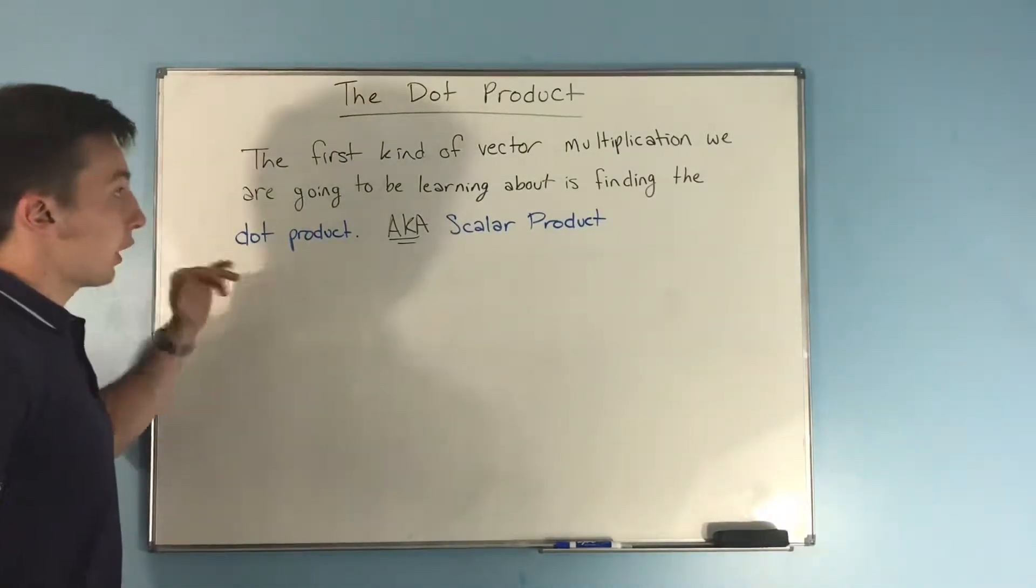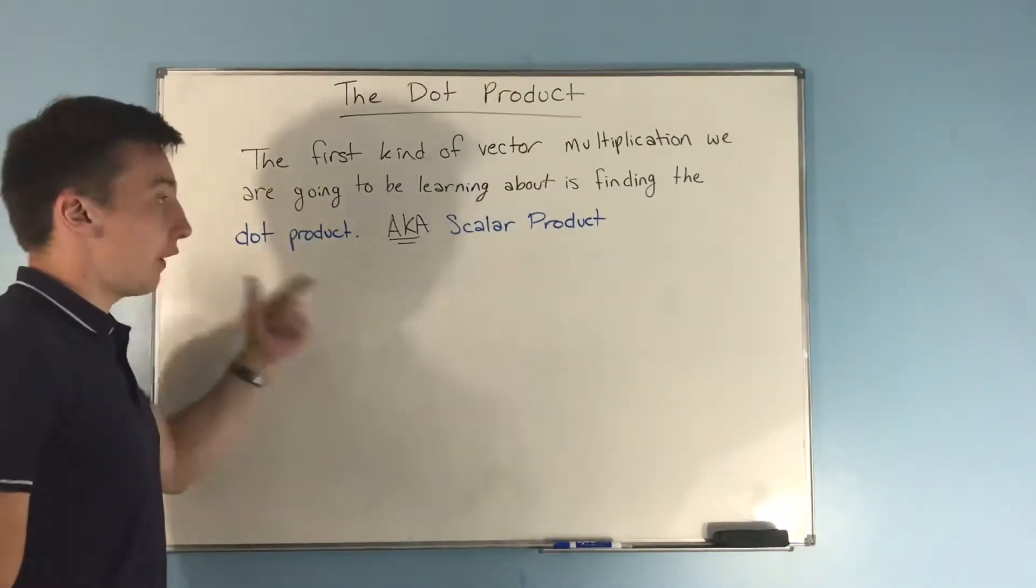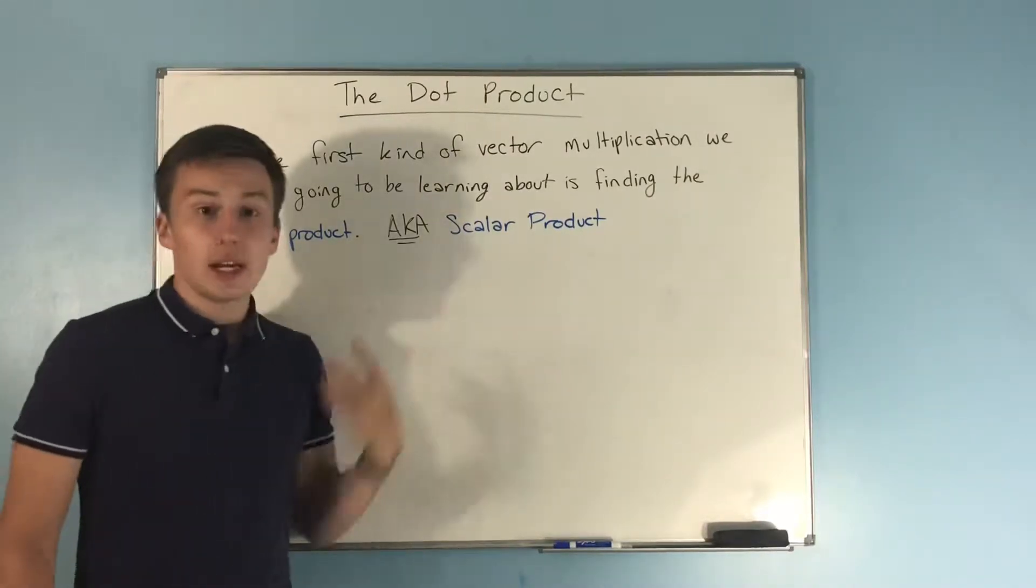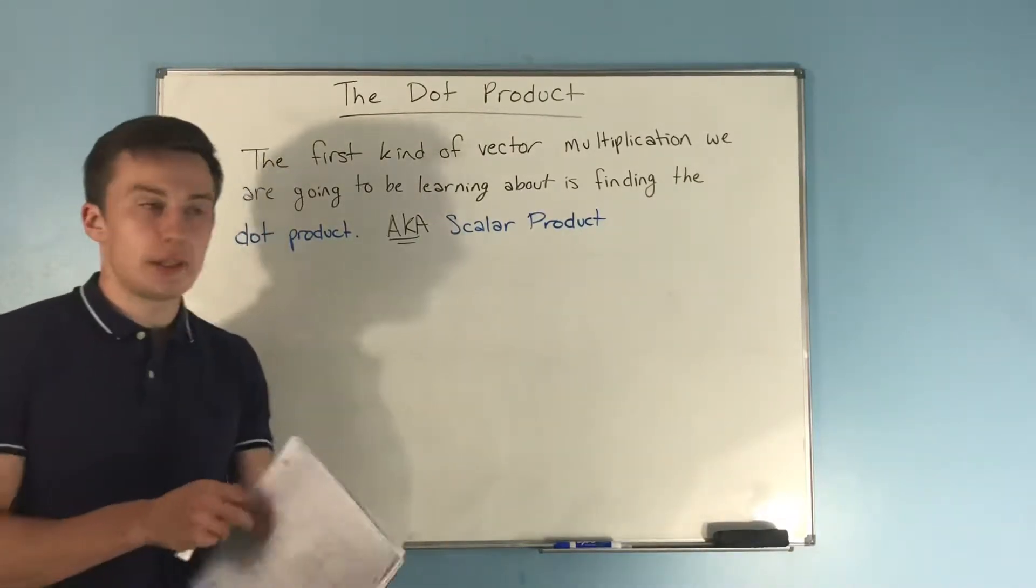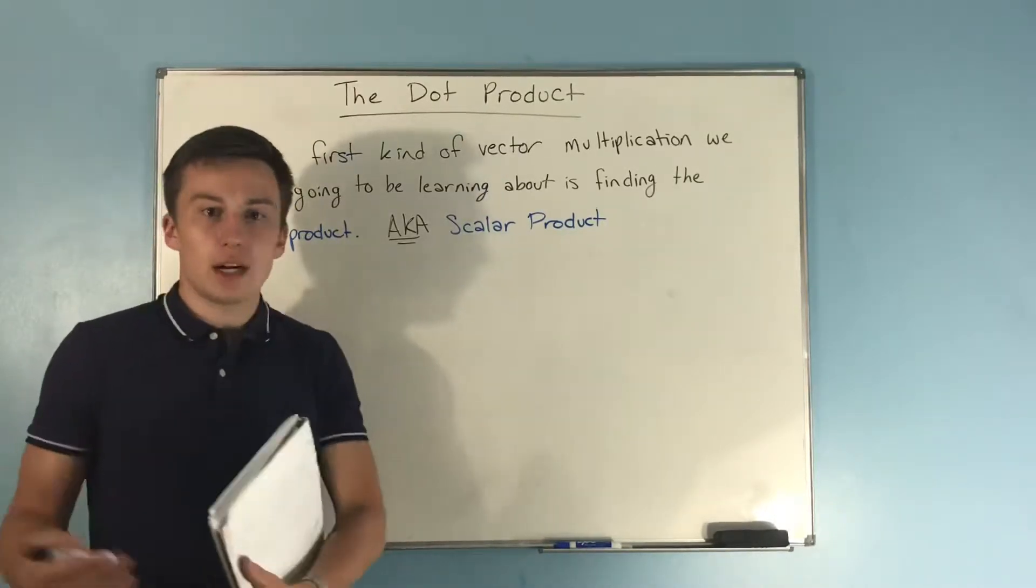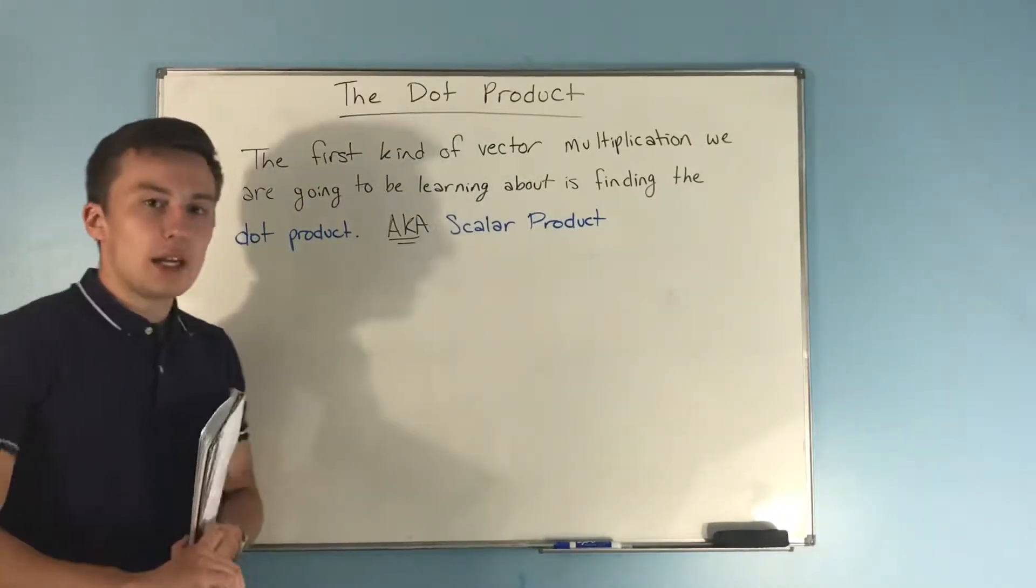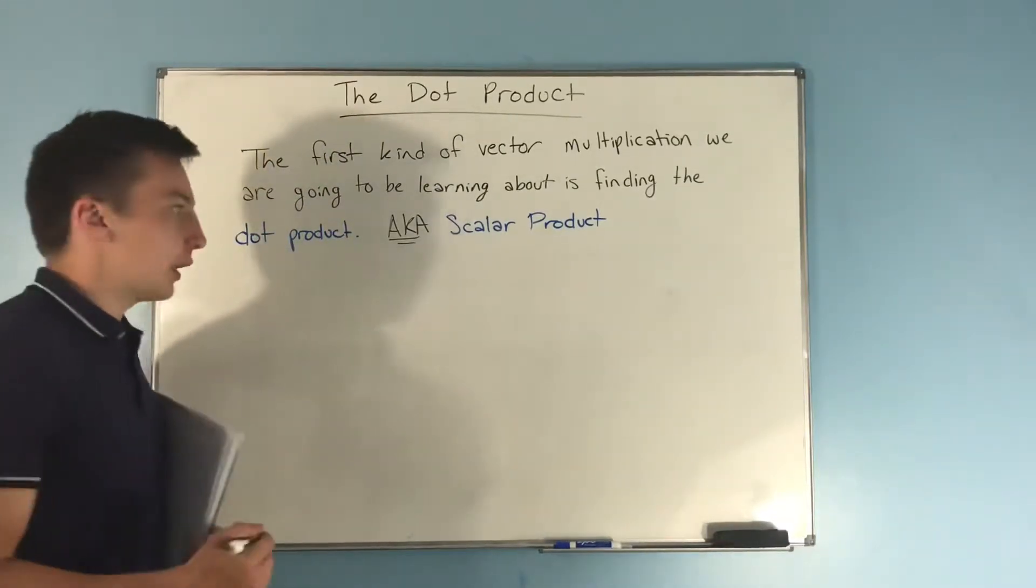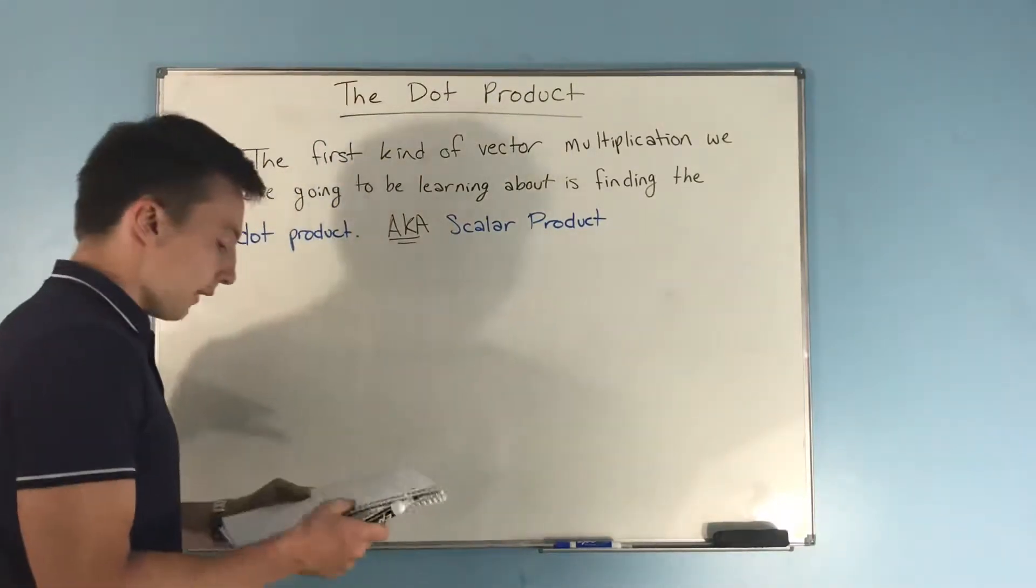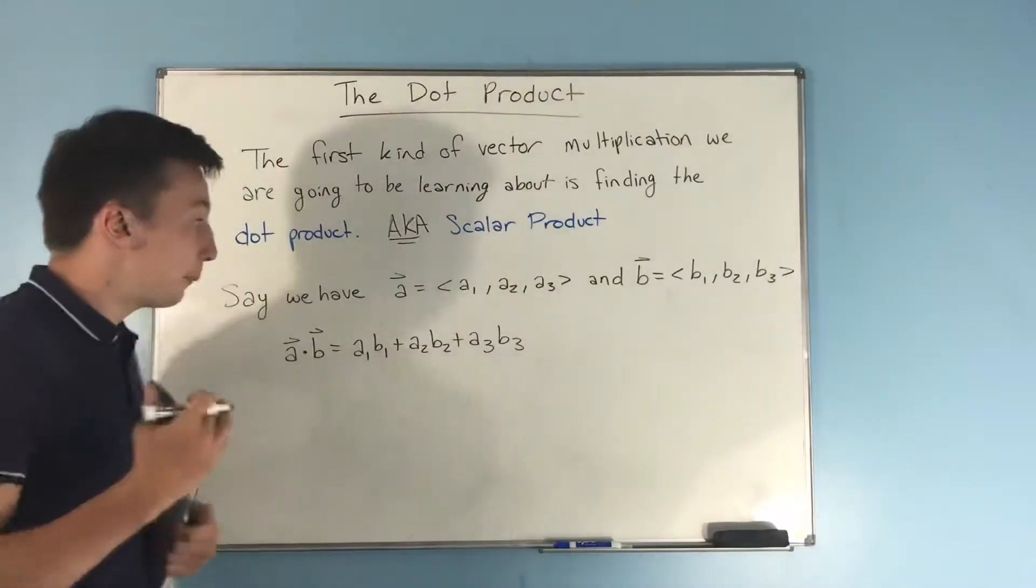The first way we're going to learn to do vector multiplication is finding the dot product, also known as the scalar product. We're going to talk about some of the uses because obviously there has to be a meaning to finding the dot product. We'll talk more about that in videos to come, but for now let's focus on how to find the dot product - it's actually a pretty simple process.